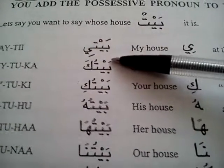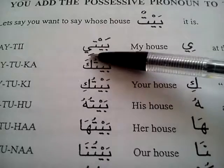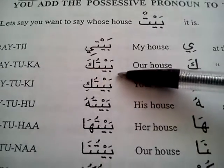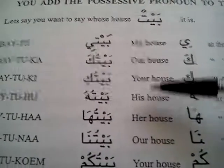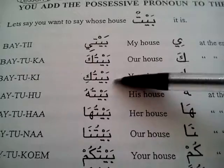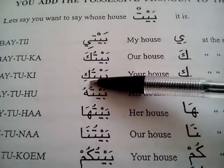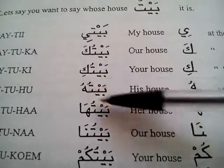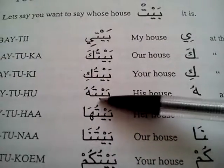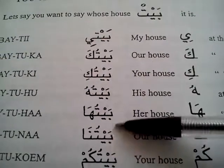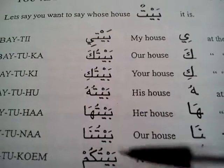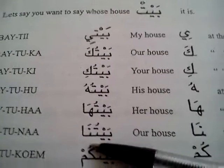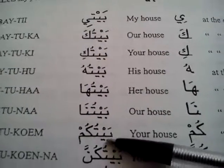baiti will be my house, baitu ka will be your house — which is masculine — baitu ki will be your house, feminine, baitu hu will be his house, baitu ha will be her house, baitu na will be our house.